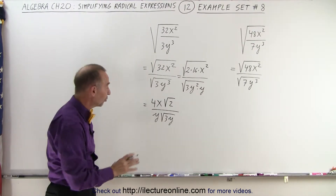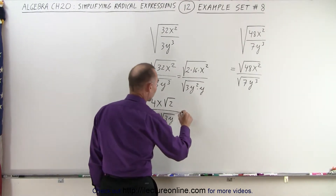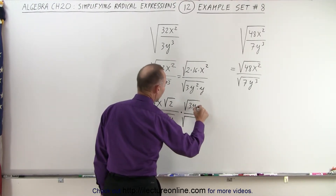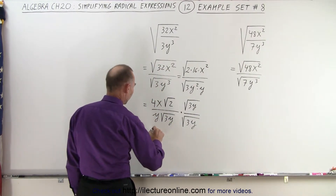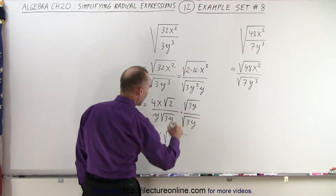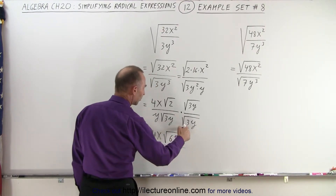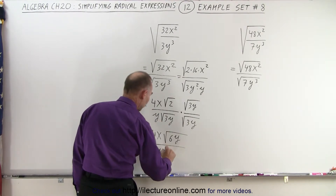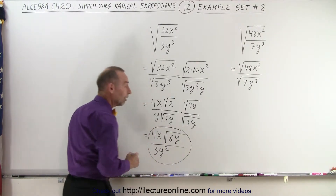The only thing left to do now is to rationalize the denominator, because we don't like that radical there. So we're going to multiply both the numerator and the denominator by the square root of 3y. This can then be written as 4x times the square root of 2 times 3y, which is 6y, divided by — in the denominator — the square root of 3y times the square root of 3y is simply 3y. So we have 3y times y, which becomes y squared, and so this would be the final form of that expression.